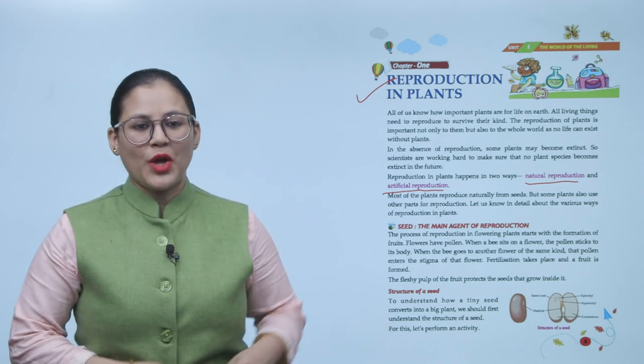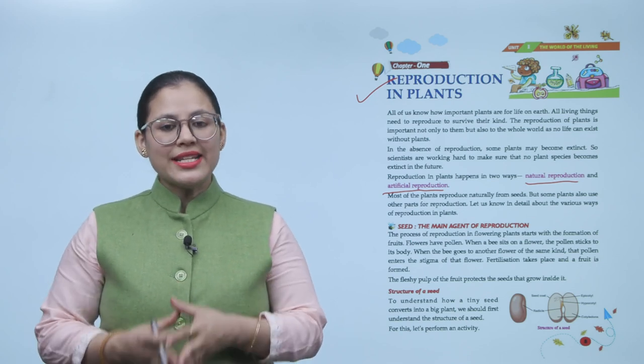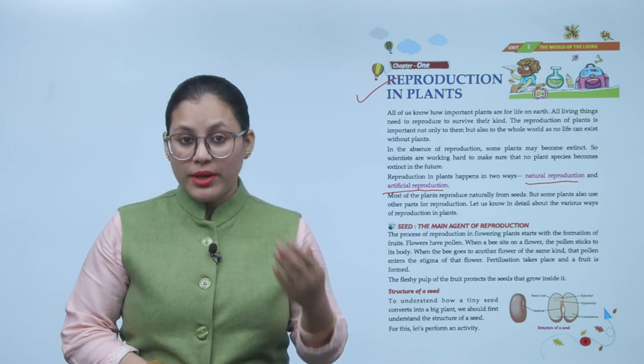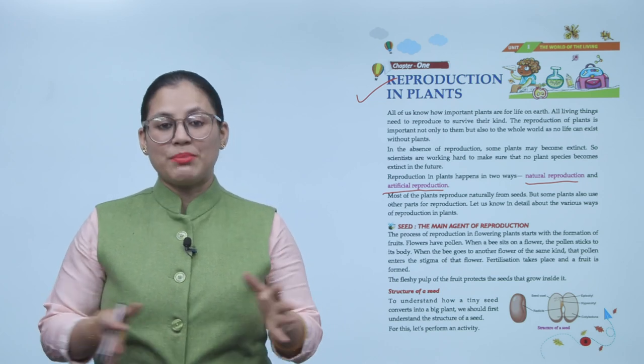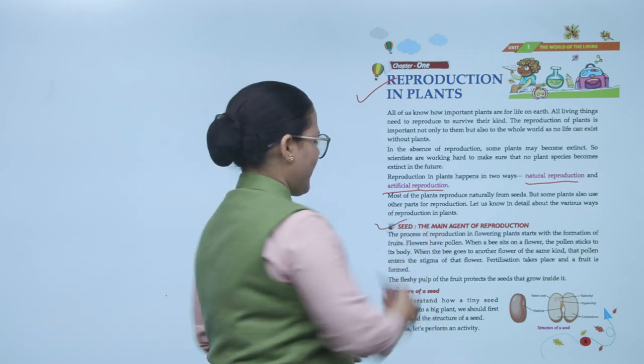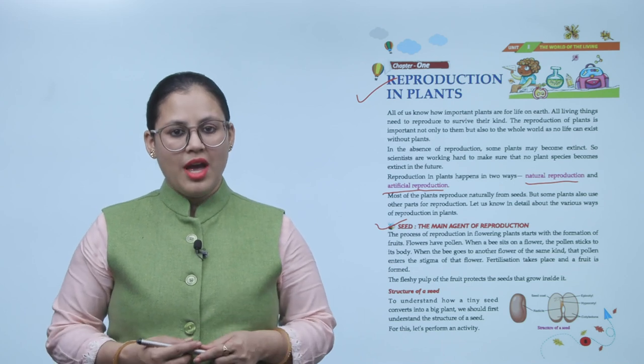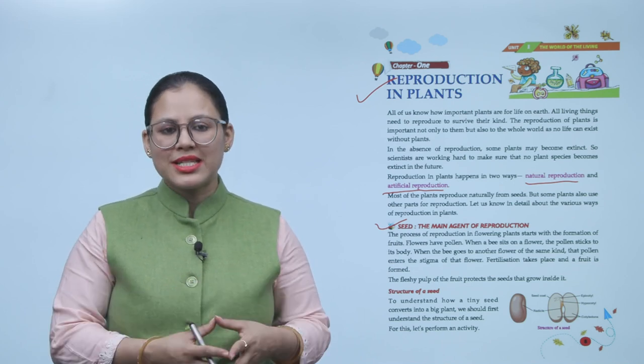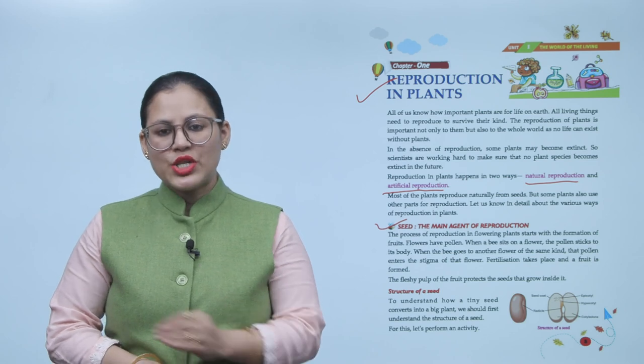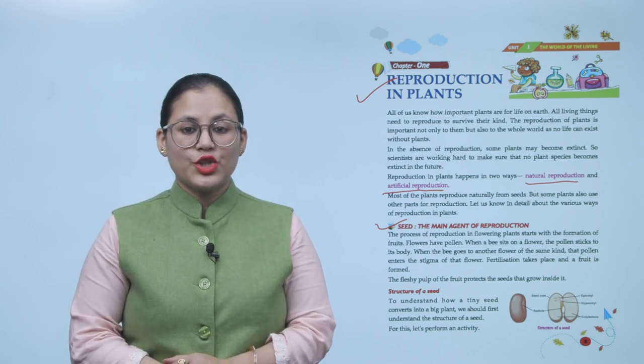Most of the plants reproduce naturally from seeds, but some plants also use other parts for reproduction. Let us know in detail about the various ways of reproduction in plants. Seed: the main agent of reproduction. The process of reproduction in flowering plants starts with the formation of fruits. Flowers have pollen. When a bee sits on a flower, the pollen sticks to its body. When the bee goes to another flower of the same kind, that pollen enters the stigma of that flower. Fertilization takes place and a fruit is formed. The fleshy pulp of the fruit protects the seeds that grow inside it.